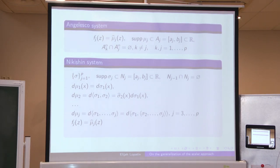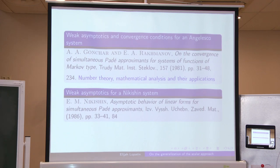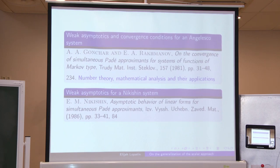Of course, this problem is too wide, and one of the opportunities is to consider restricted classes of functions. The most known and investigated systems are the Angelesco system and the Nikishin system. Since the definitions were given in many talks today, I will omit them now and speak about the known results. In 1981, the vector potential equilibrium method for estimating weak asymptotics and convergence conditions for Hermite-Padé polynomials of type 2 for an Angelesco system was discovered.